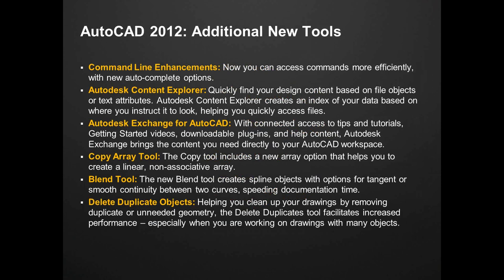Some of the new additional tools: a command line enhancement with auto-complete options, so you can start typing in your command and you'll see a list of those commands pop up. The content explorer lets you find your design content based on objects or attributes — it creates an index of your data and tells you where to look for it. The Autodesk Exchange in AutoCAD gives you more tips and tricks, getting started videos, and help content brought directly to your AutoCAD workspace. The copy tool now allows you to create linear, non-associative arrays. There's also a new blend tool that creates spline objects with tangent options, smoothing them out and giving continuity between curves, speeding up documentation time.